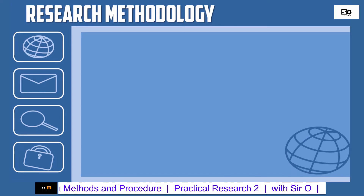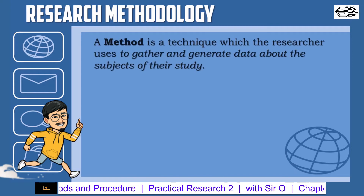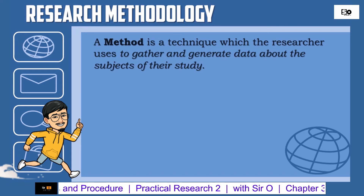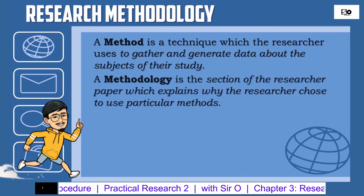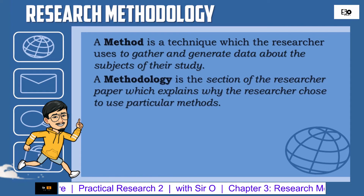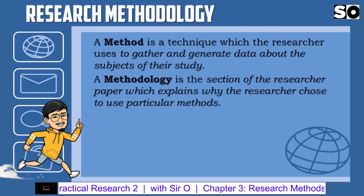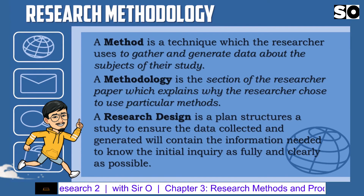Before proceeding, it is necessary to define the terms. A method is a technique which the researcher uses to gather and generate data about the subject of their study. Methodology is the section of the research paper which explains why the researcher chose to use particular methods. While a research design is a plan that structures a study to ensure the data collected and generated will contain the information needed.